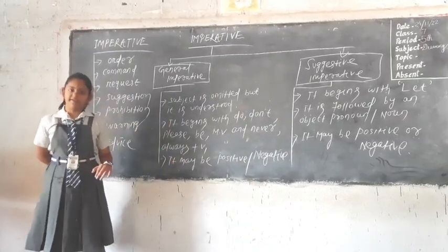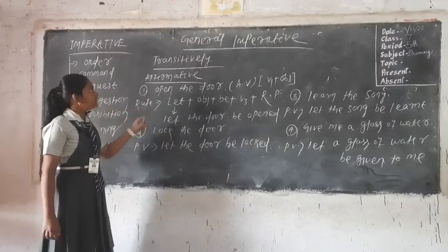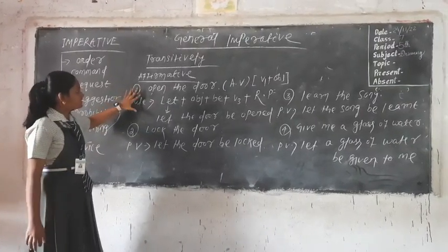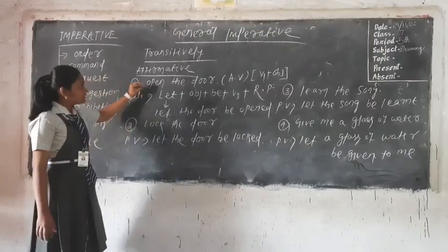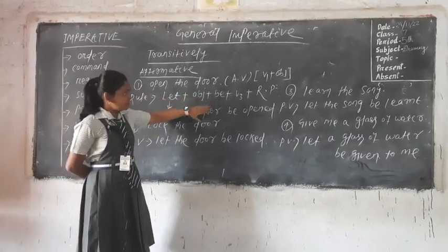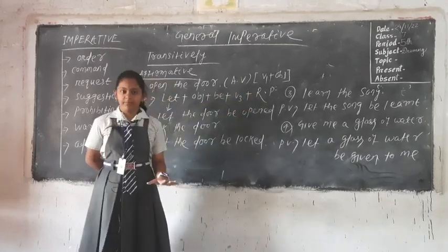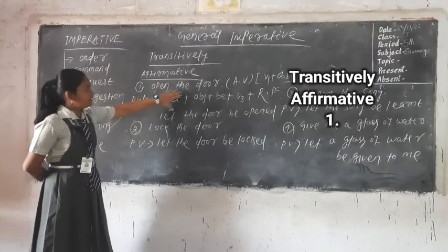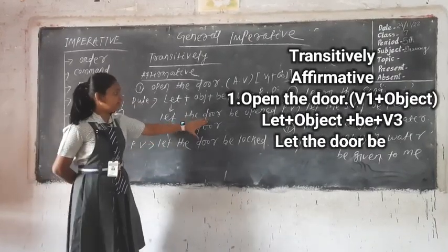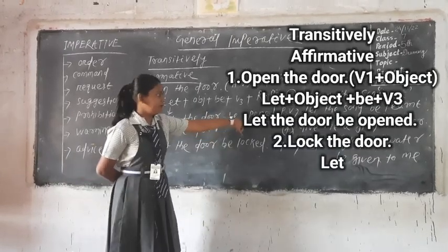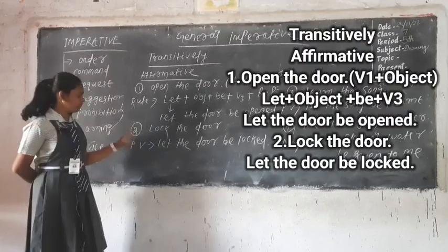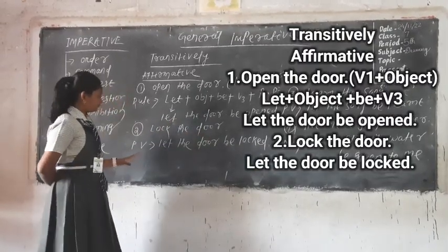Let's discuss how to convert general imperative sentences from active into passive, specifically the transitive structure — that is, sentences having an object. For the affirmative structure, the rule is: let + object + be + verb 3 + remaining part if any. For example, 'open the door' — the door is the object, so the passive is: 'let the door be opened'. The verb 3 form of open is opened. The sentence is now passivized. Second example: 'lock the door' becomes 'let the door be locked'.